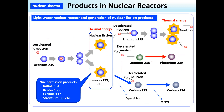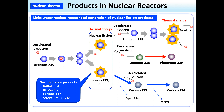Regarding the products of a nuclear reactor, the light water nuclear reactor is currently the most widespread type of reactor around the world, and is the type used in Fukushima. Bombarding uranium-235 with neutrons results in nuclear fission. Radioactive nuclear fission products such as iodine-131, caesium-137, and strontium-90 are created in this process.